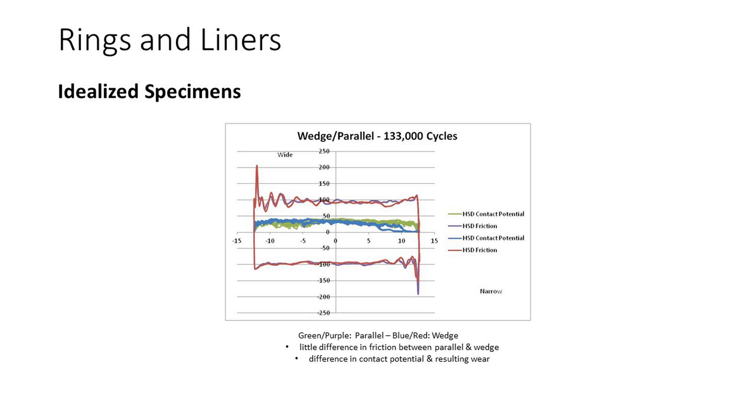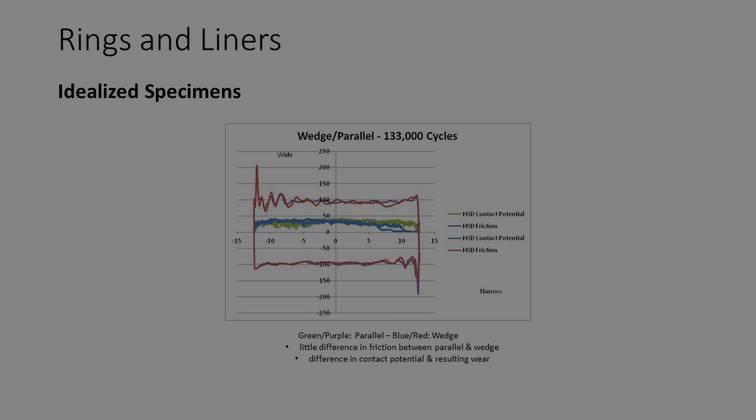If the cylinder overlaps the edges of the plate, there may still be issues with geometric stress concentrations, but these can be mitigated by having curved edges. Having curved edges means that the edges of the plate do not have to be parallel, making a wedge-shaped specimen possible, such that there is a stroke-wise pressure variation. There is very little difference in friction between parallel and wedge-shaped specimens running under identical conditions. There is, however, a difference in the contact potential and the resulting wear.